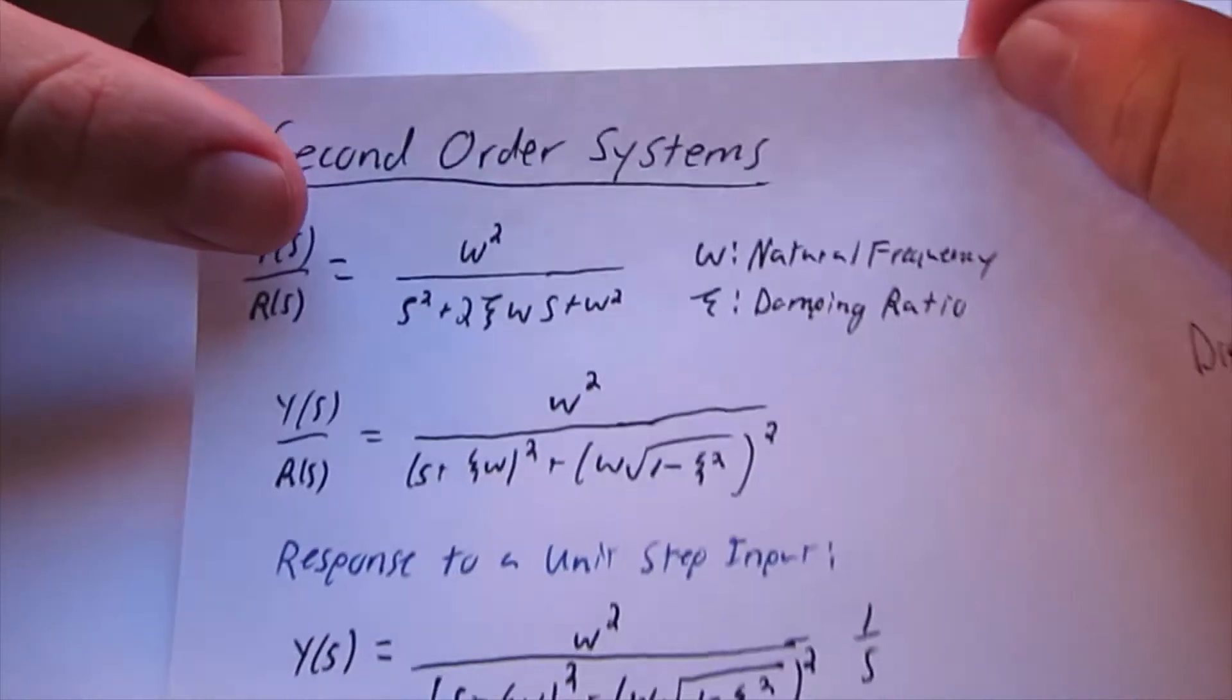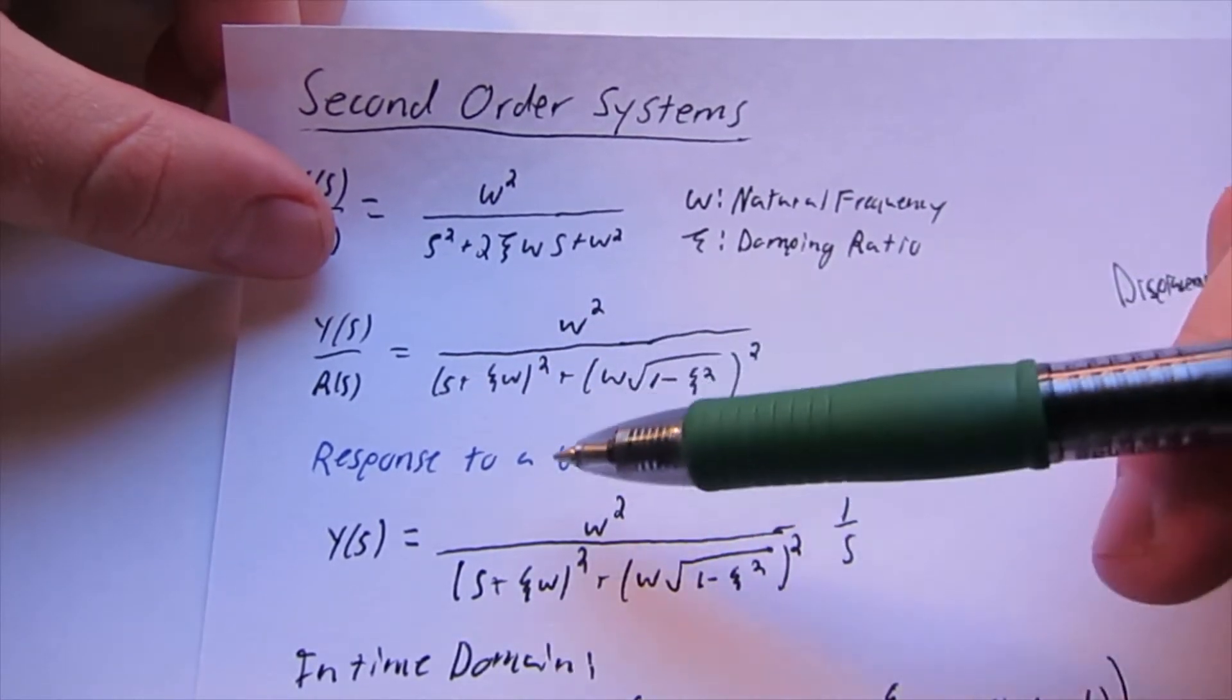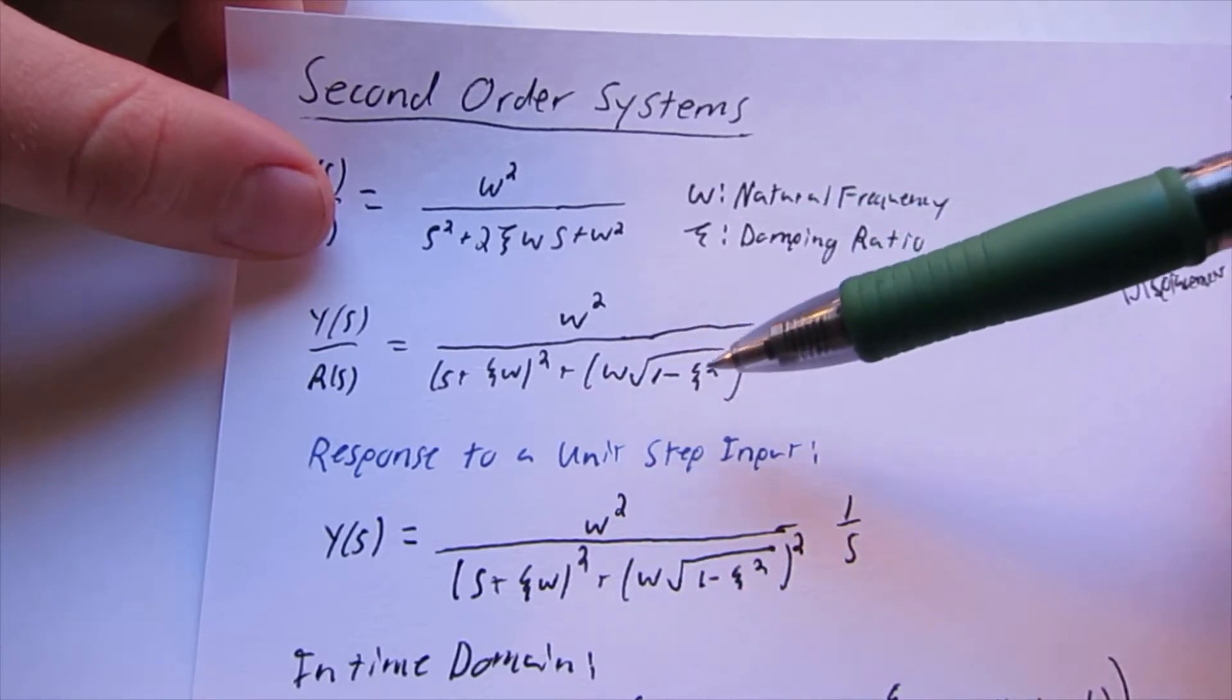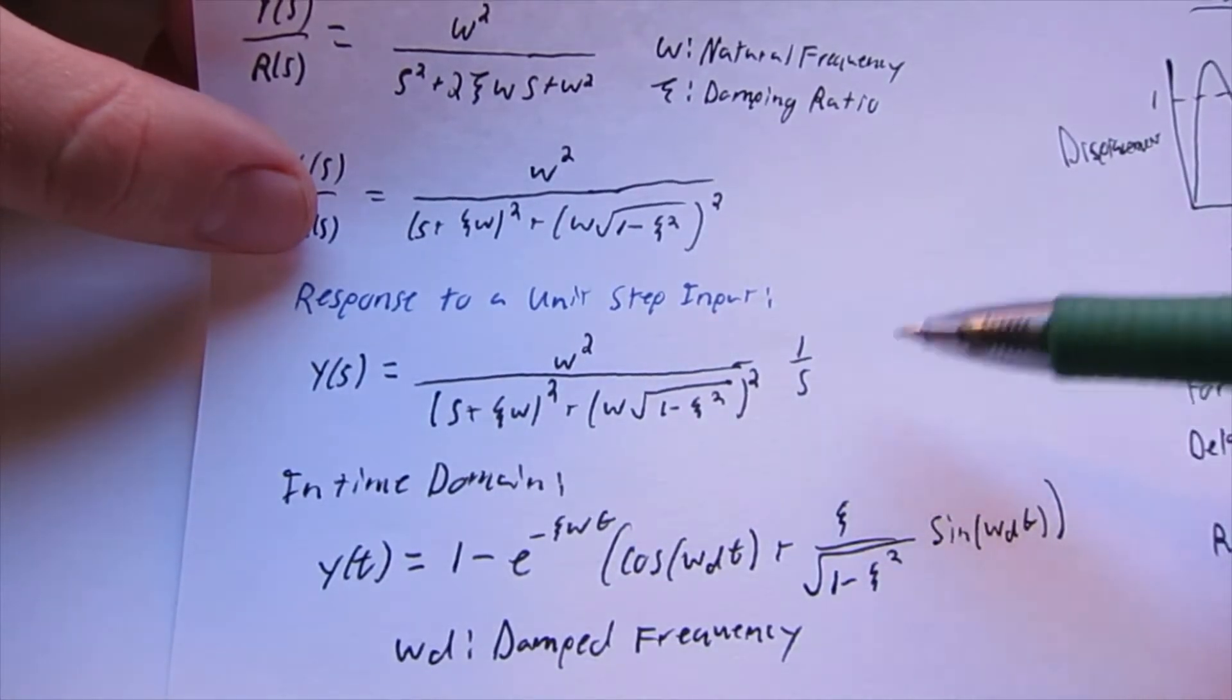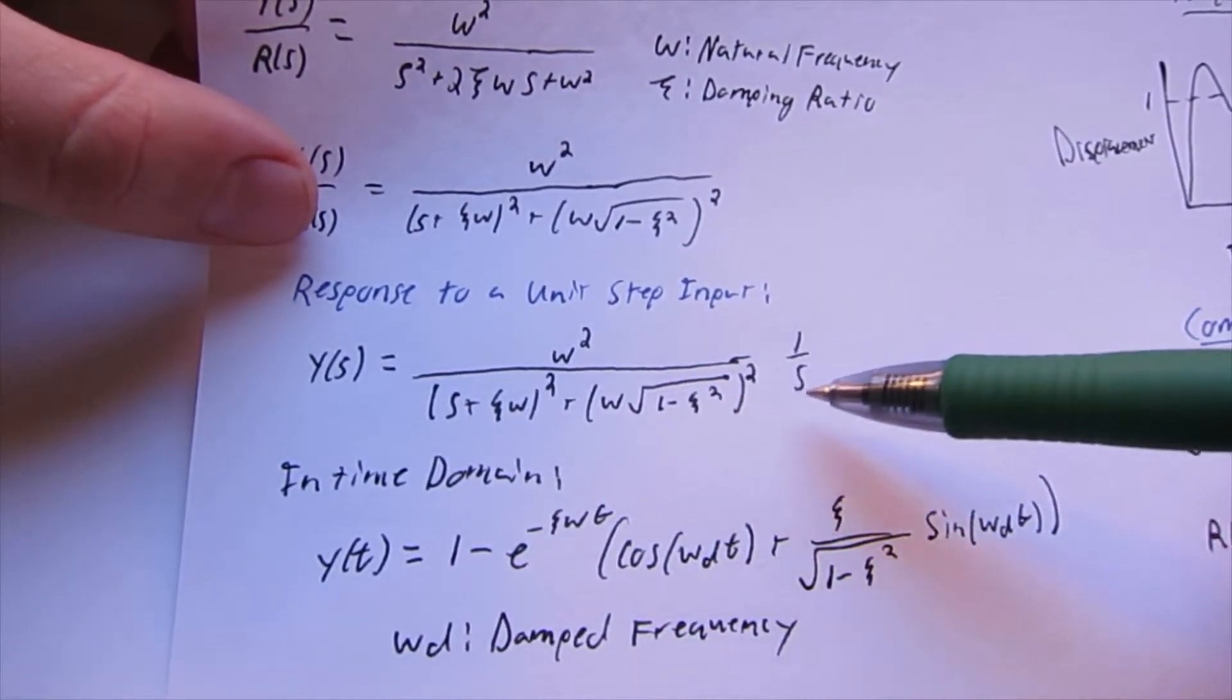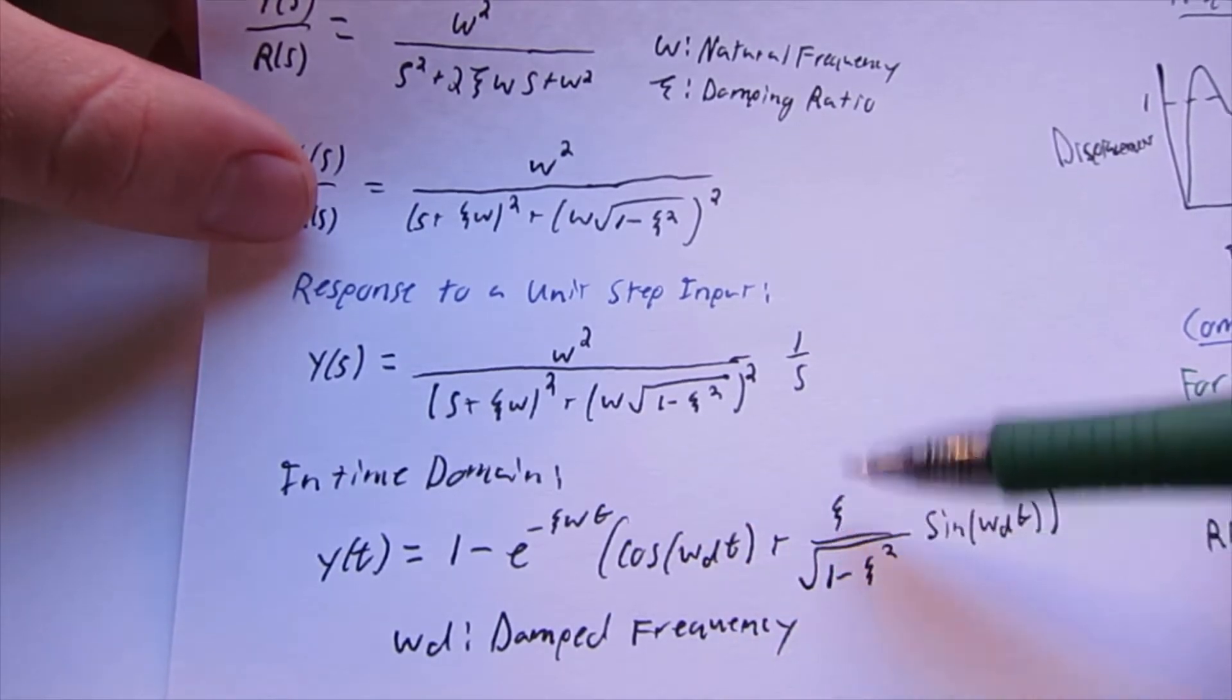This can be, the bottom here, the denominator, can be written like this, and then the response to a unit step input, so the input here, multiply the outside by r of s, and then in the s domain, a unit step input can be written as 1 over s. If you want to figure out why that's the case, you can look at my video on Laplace transforms, and then you can do an inverse Laplace transform from this to this to get from the s domain to the time domain, and then this is our response to unit step input in our time domain.